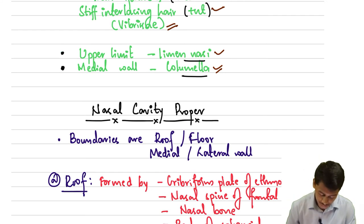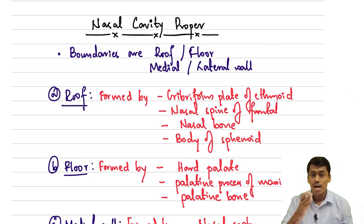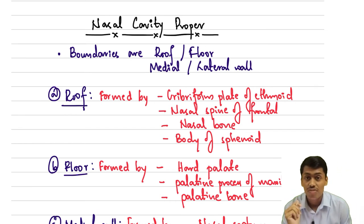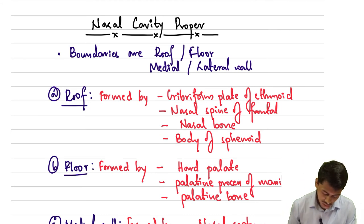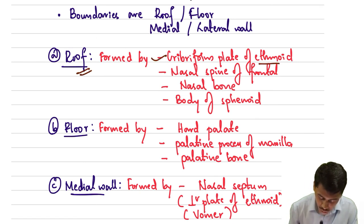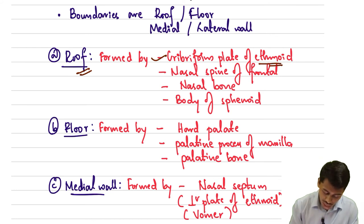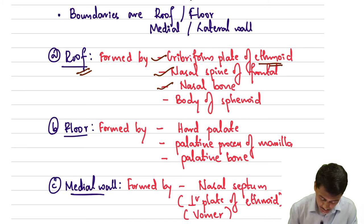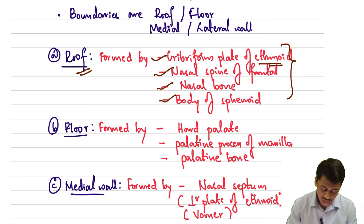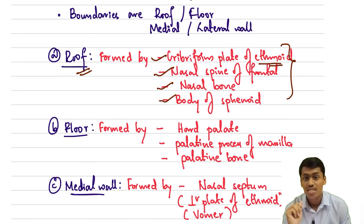Now let's move on to the nasal cavity proper. Its boundaries are: a roof, a floor, a medial wall, and a lateral wall. The roof is formed by the cribriform plate of the ethmoid bone — where the olfactory nerves are located — along with the nasal spine of the frontal bone, nasal bones, and the body of the sphenoid.